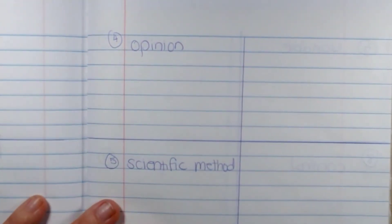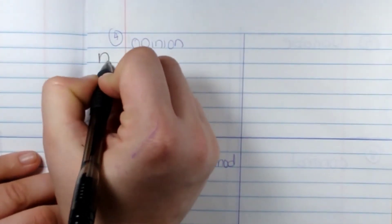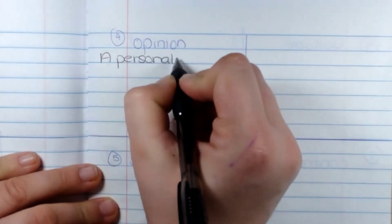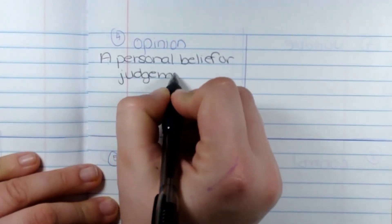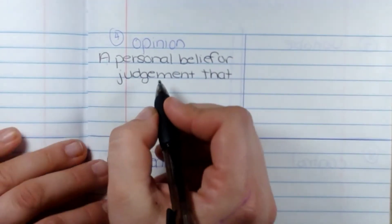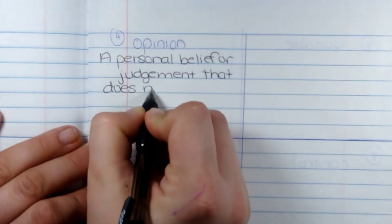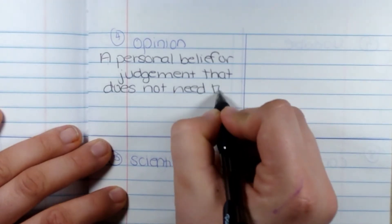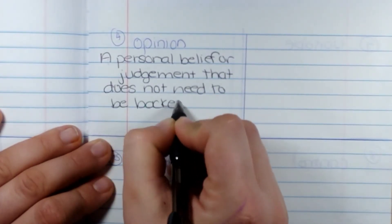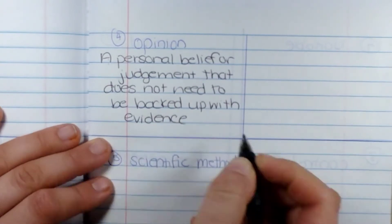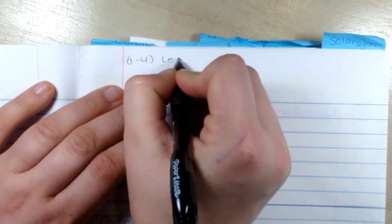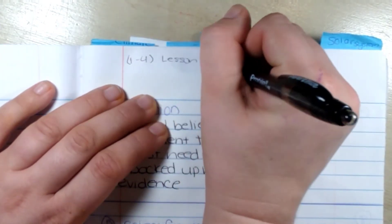An opinion. An opinion is a personal belief or judgment that does not need to be backed up with evidence. An opinion is a personal belief or our nature of science.